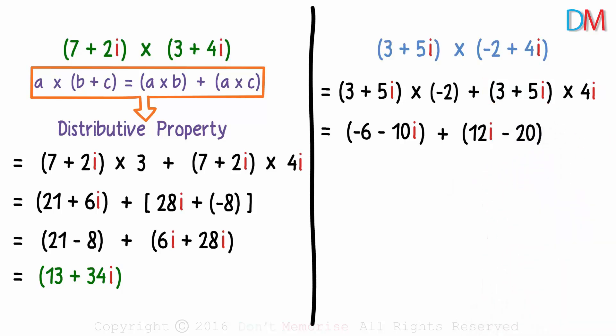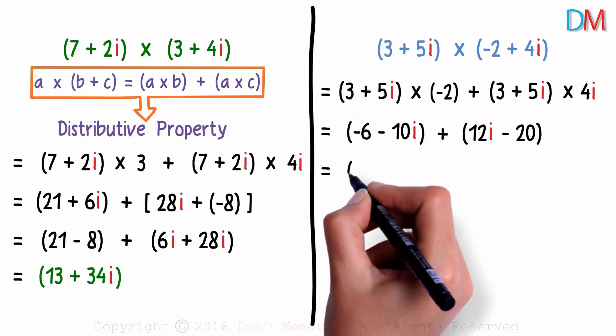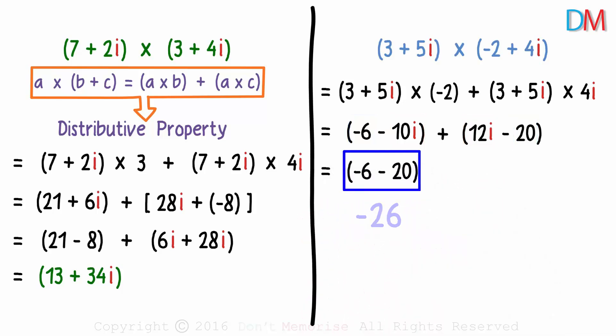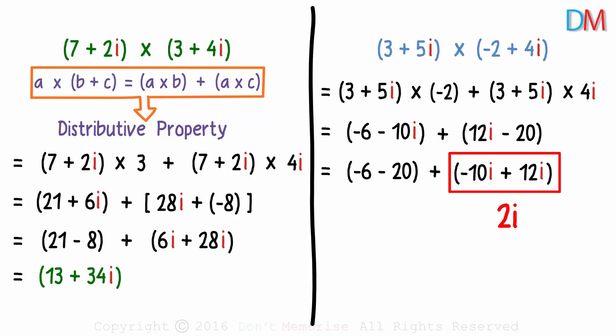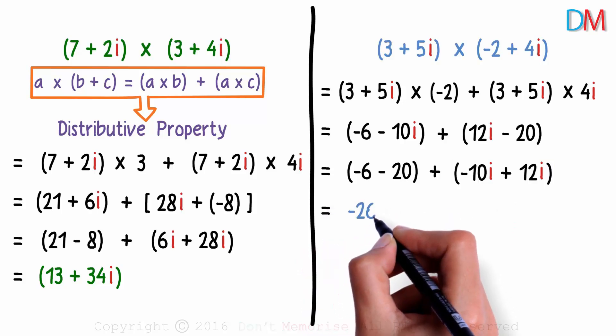And the last step is to add the real parts and the imaginary parts separately. We get negative 6 minus 20 or negative 26 as real part, and negative 10i plus 12i or 2i as imaginary part. Hence, their product is negative 26 plus 2i.